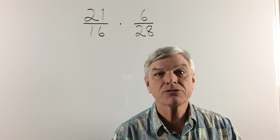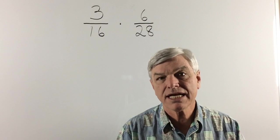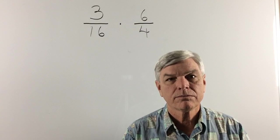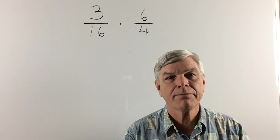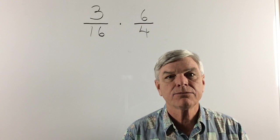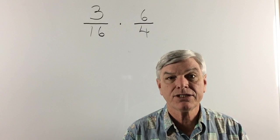21 can be reduced by 7. And we have 3. Now 16 cannot be divided by 7. But 28 can. And we have 4. Now let's see if 16 cannot be divided by 3. 4 can't be divided by 3. So we're good there. The next numerator is 6. And 6 can be divided by 2.